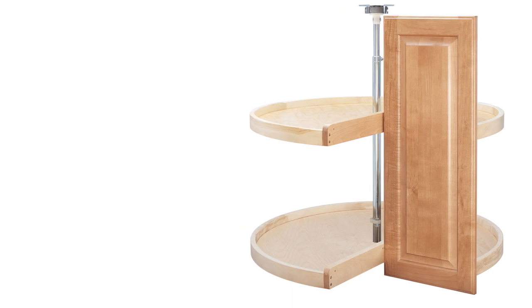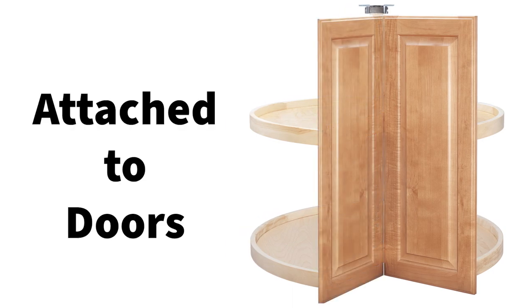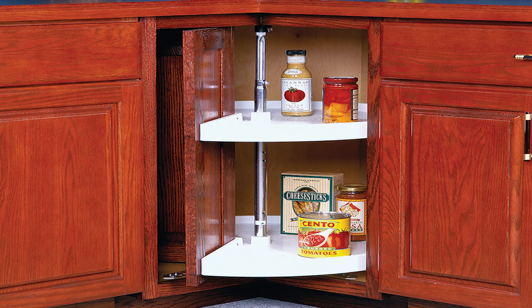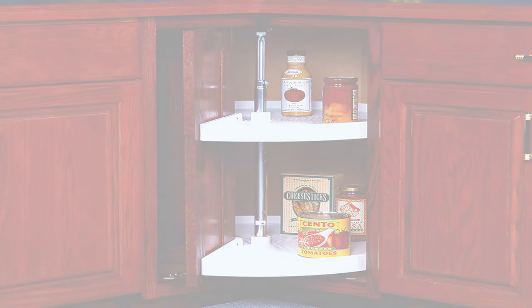These work just like the kidney Lazy Susans except these units are designed for the cabinet door to be directly attached to the Lazy Susan. You'll know if you need a pie cut Lazy Susan because your doors will rotate into the cabinet when you actually use the Lazy Susan.